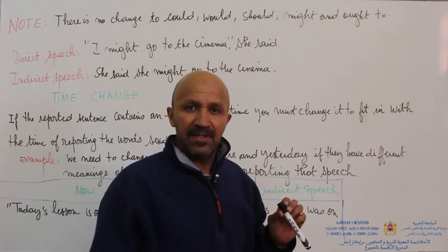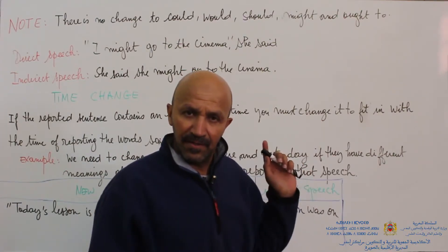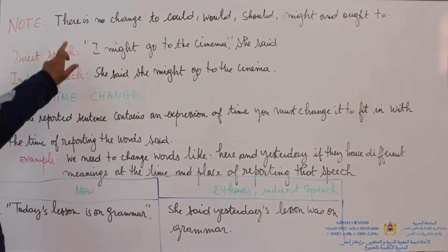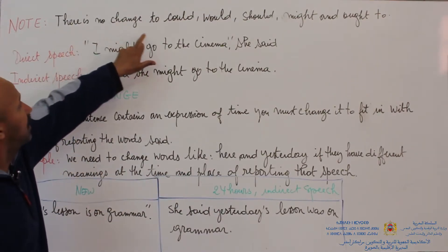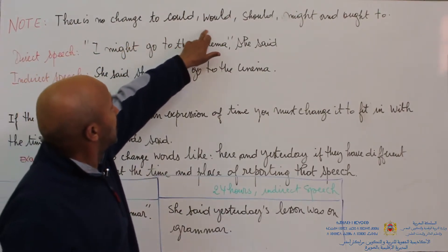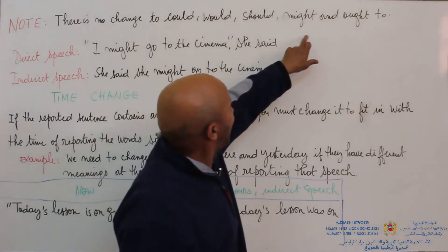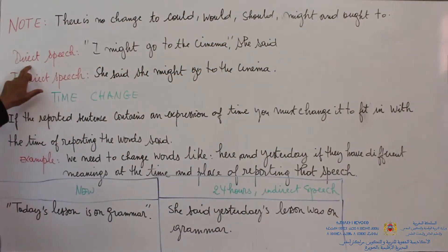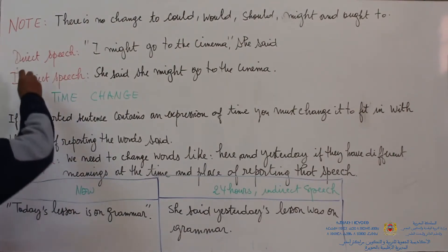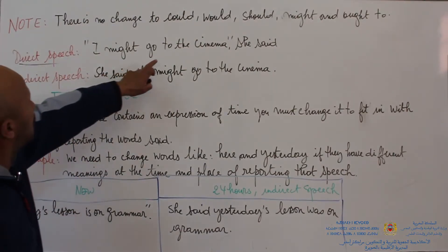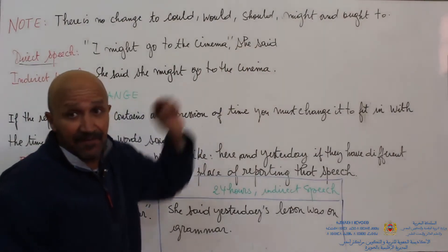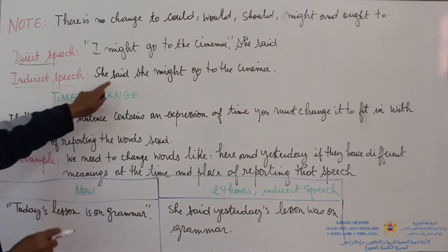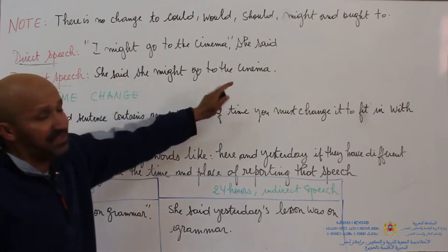Please take special note: there is no change to could, would, should, might, and ought to. For example, direct speech: 'I might go to the cinema,' she said. In indirect speech: she said she might go to the cinema.